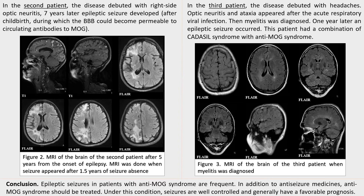In the last case, the disease debuted with headaches. Optic neuritis and ataxia appeared after an acute respiratory viral infection. Then myelitis was diagnosed. One year later, an epileptic seizure occurred. This patient had a combination of CADASIL syndrome with anti-MOG syndrome. In figure 3, you can see the MRI of the brain of the third patient when myelitis was diagnosed.